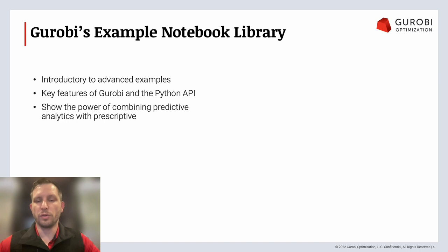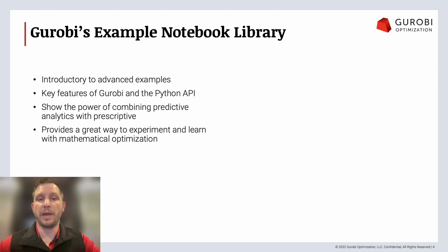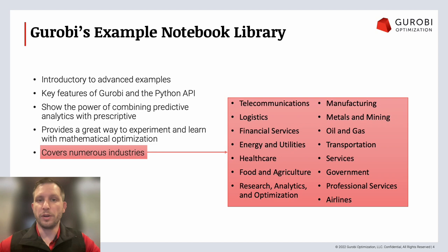Many of our examples are more traditional operations research examples to help you understand how mathematical optimization works. We've been recently expanding our library to combine predictive analytics with prescriptive analytics, to show how data science and mathematical optimization can really work well together. Our examples cover numerous industries — things like airlines, telecommunications, healthcare, energy and utilities, financial services — no matter what your interests are, there's going to be something that will peak your interest and get you going.